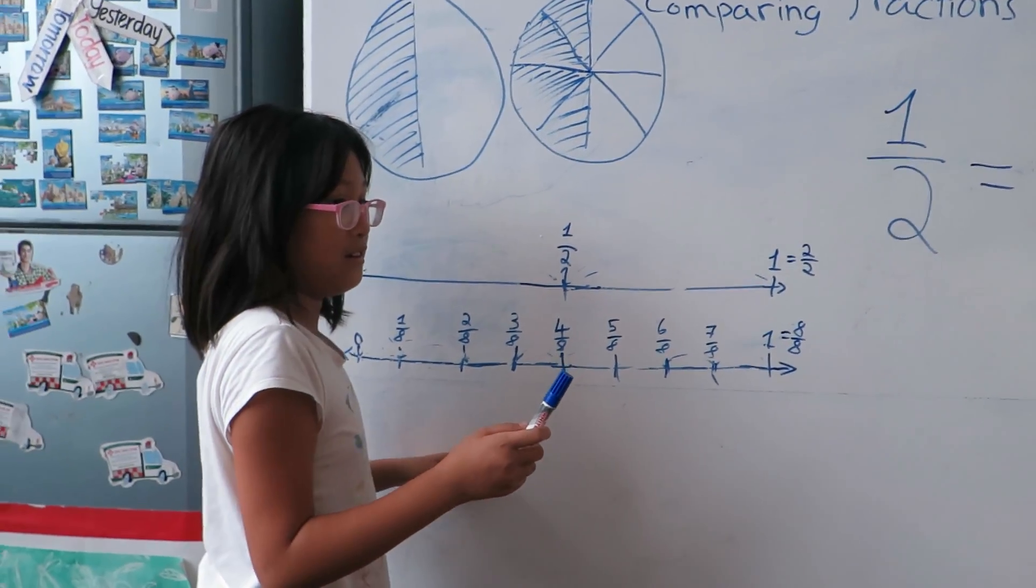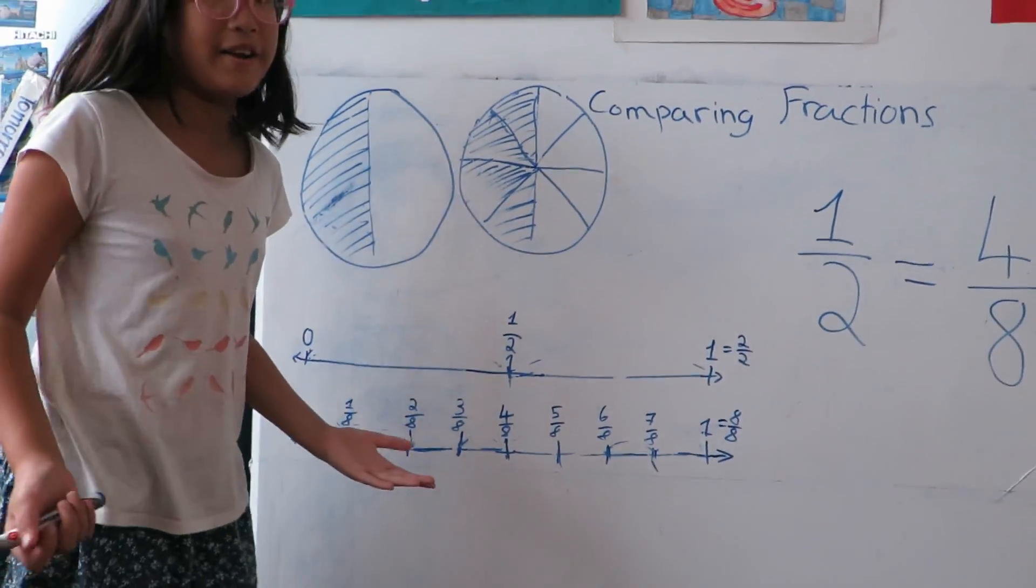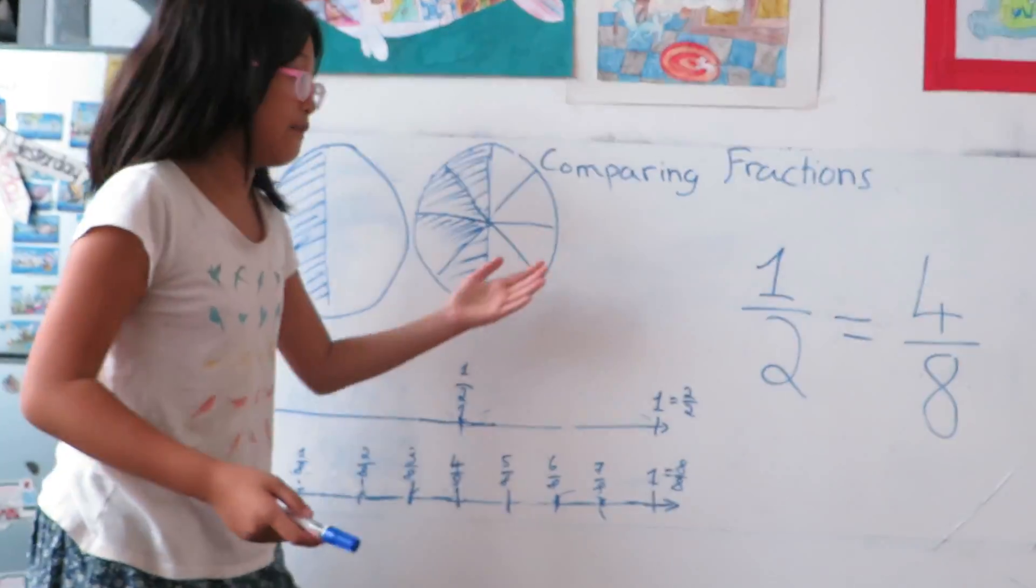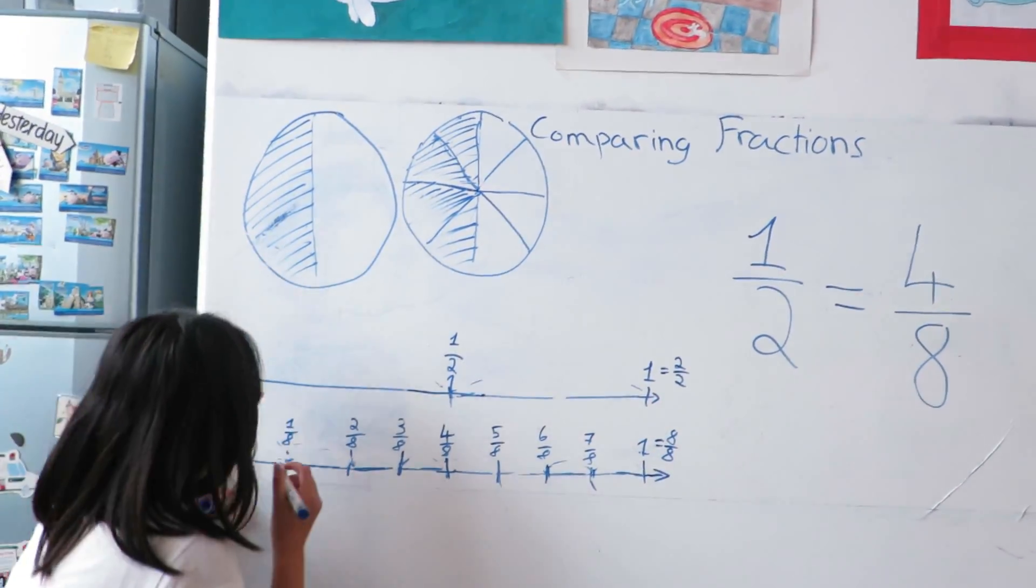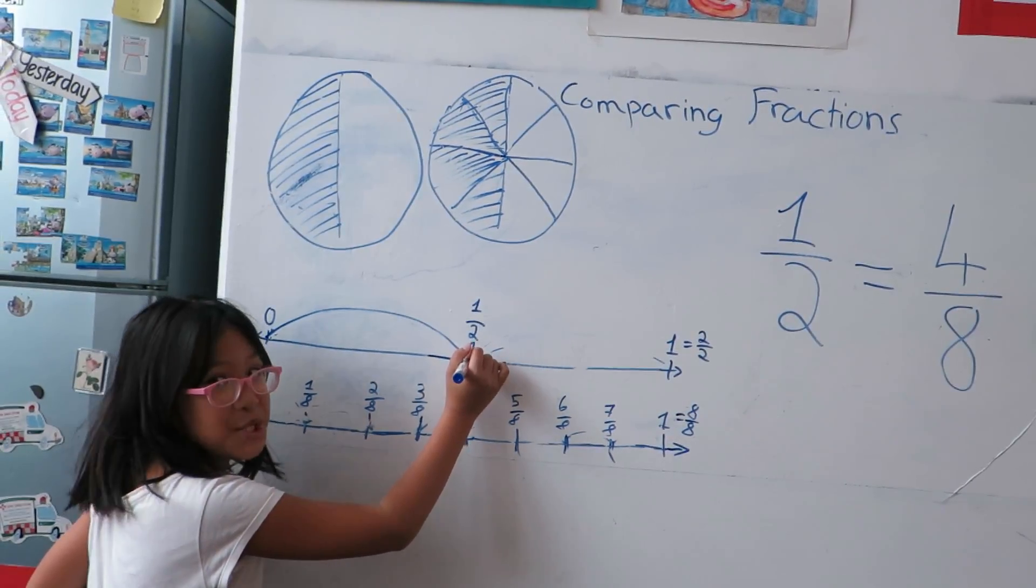So this line plot is for four eighths. Then let's find one half and four eighths. One half—so one half is over here.